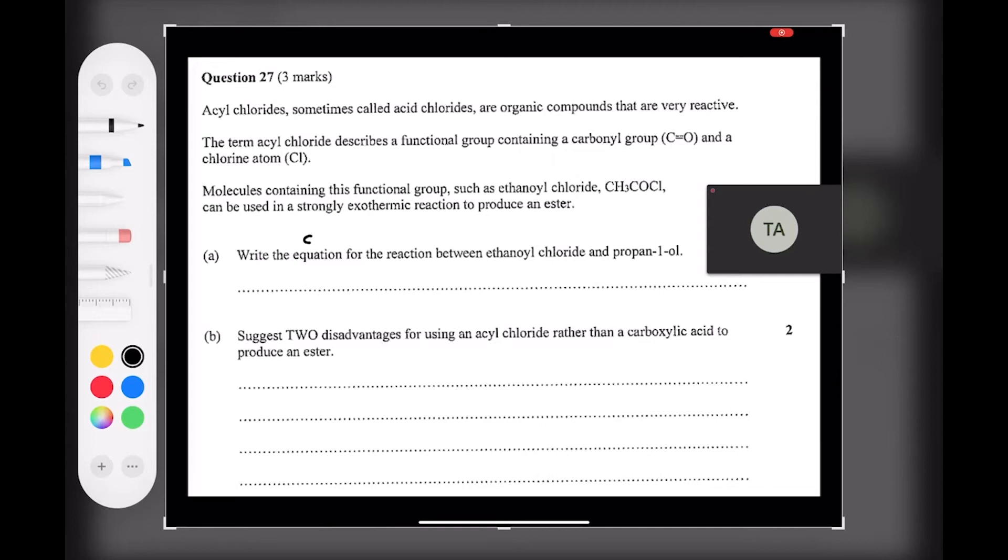I'd like to draw it in full expanded form. So ethanoyl chloride is CH3, and then I know I've got a carbon connected to a double bond carbonyl group, and I've got a chlorine attached there. Makes sense. Now I need to first know the reaction between this compound. I need to know it's very reactive, that's the one thing I've learned from above here, and it's going to react with propan-1-ol. So let's draw propan-1-ol.